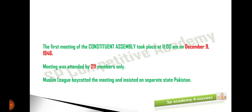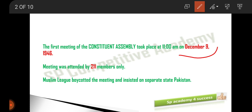The first meeting of the Constituent Assembly took place at 11 AM on December 9th, 1946. In the last session we saw that the Constituent Assembly had been set up, elections had been conducted, and members had been selected. The next step was the first meeting. The date is important — please remember December 9th, 1946. The time is not important.